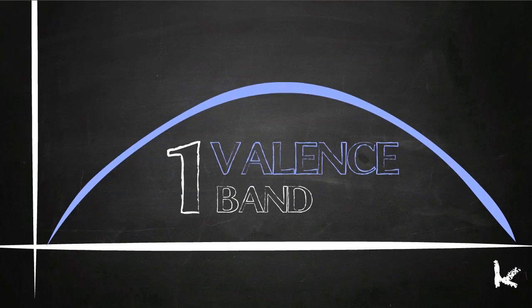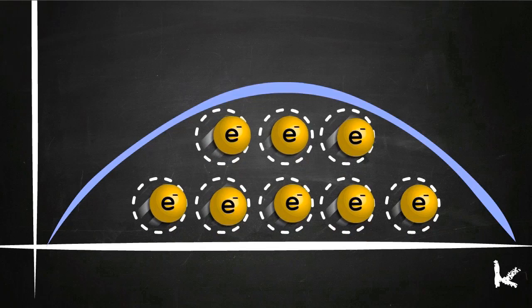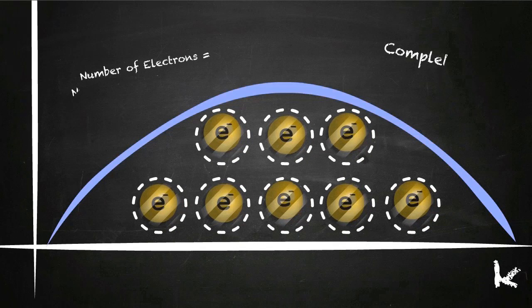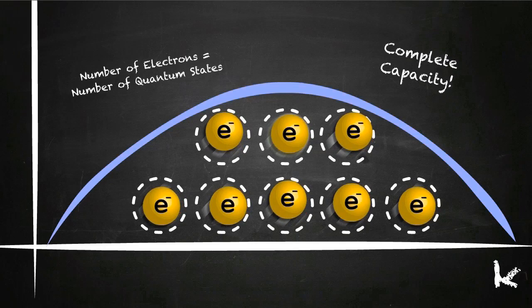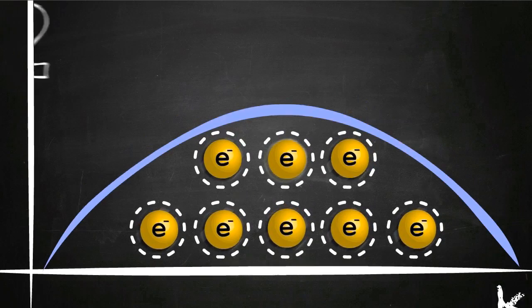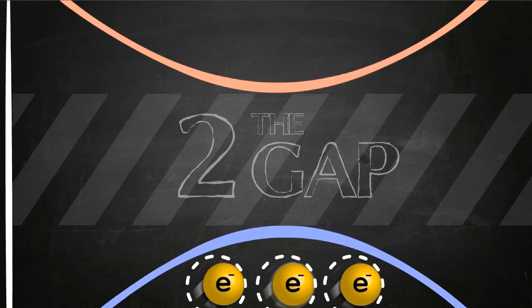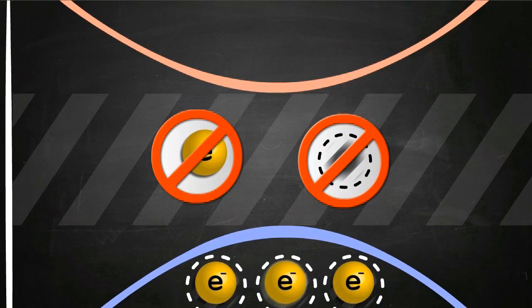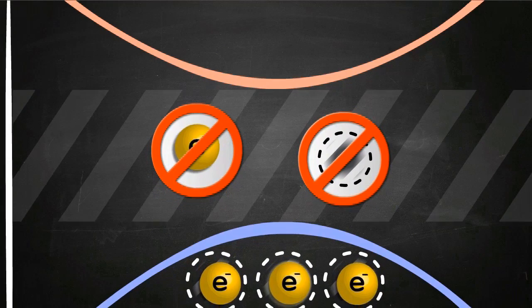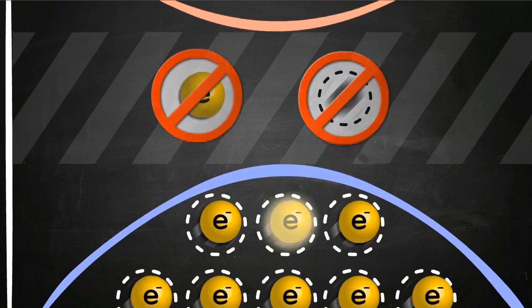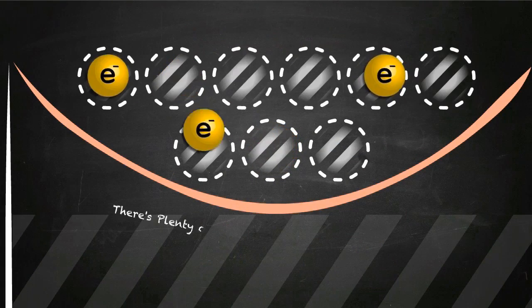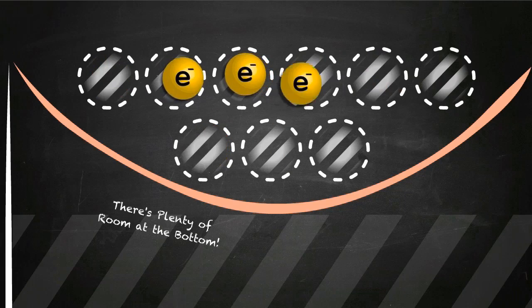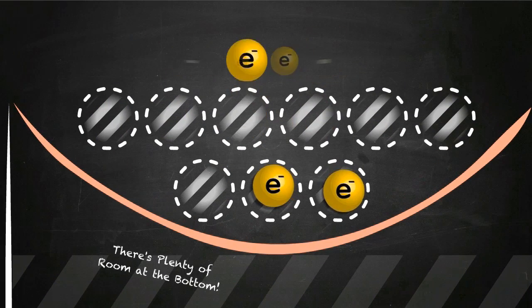One: The valence band, where electrons live. They cannot move because there are as many electrons as quantum states available. They can ascend to another band if they have enough energy, but they can never be in two: The gap. A forbidden area for the electrons. You will never find one there, but if an electron has enough energy, it can reach three: The conduction band, where electrons have empty quantum states, so they can move freely through the material in the form of electric current.